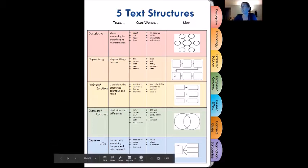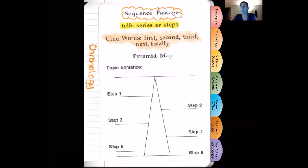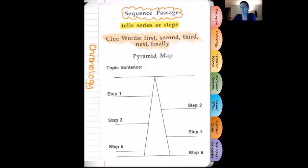We like to use some boxes with arrows showing how things happen in order over time. The map that I'm choosing to use today to find the main ideas for this chronology text will be a pyramid map.